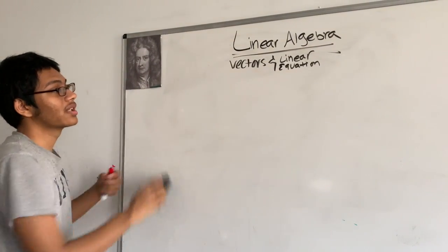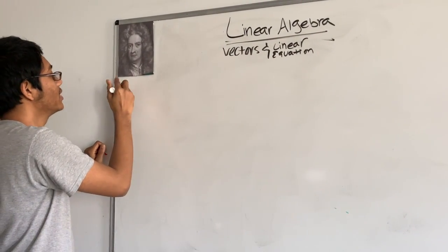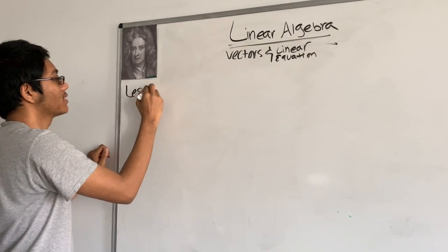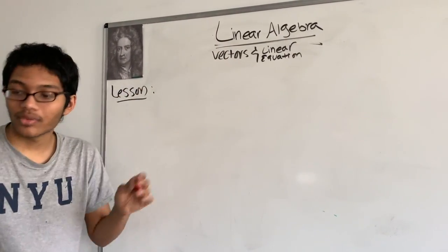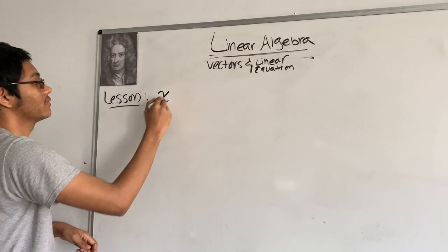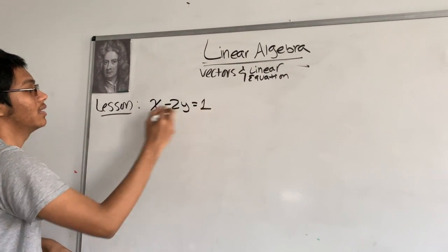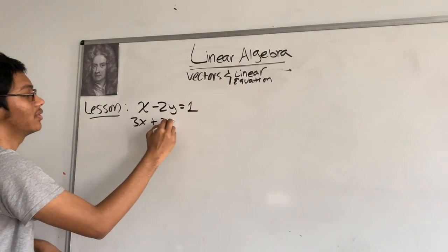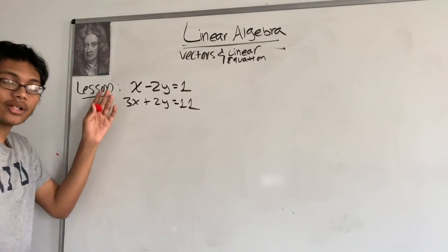During our lesson we're going to be talking about vectors and linear equations, as you can see. So we're going to get started with a simple example. x minus 2y equals 1, and 3x plus 2y equals 11. So try to solve this problem.